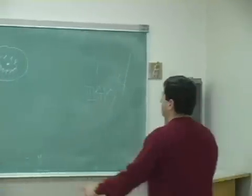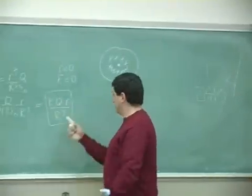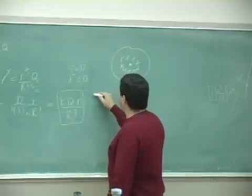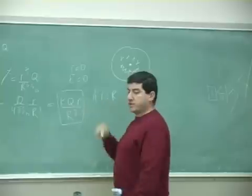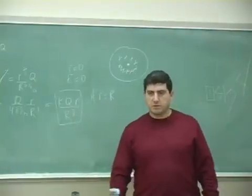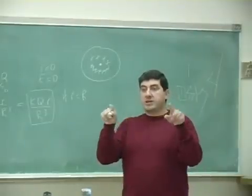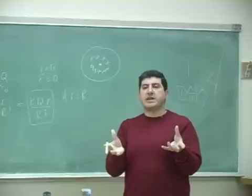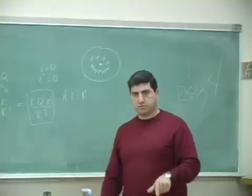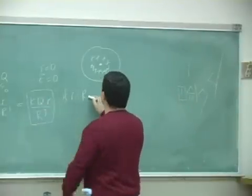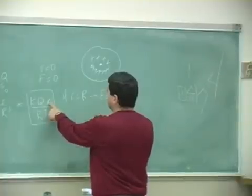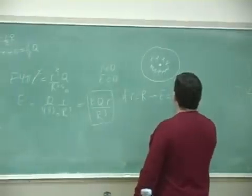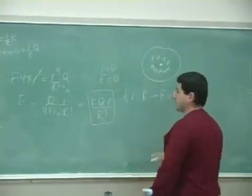The other check: if you put r equal to big R, you're at the surface of the sphere, and the electric field should behave like a point charge. Substituting, big R cancels one of the R cubes and you get KQ over R squared — which checks out.